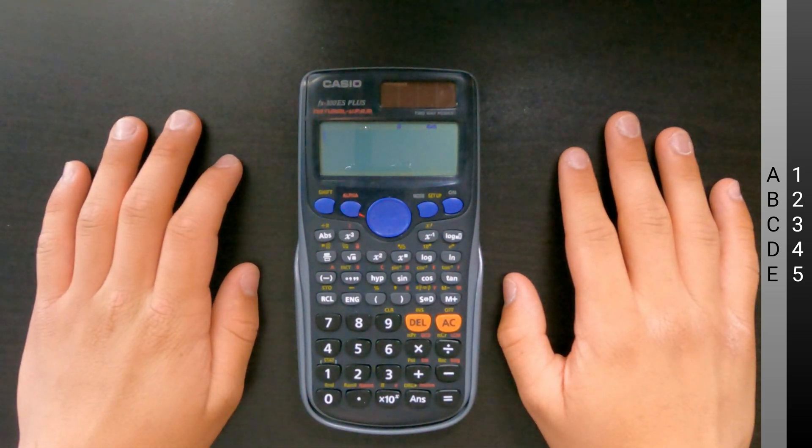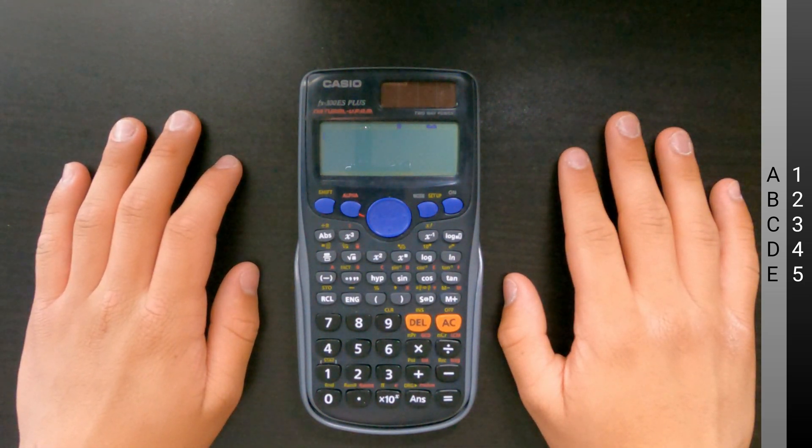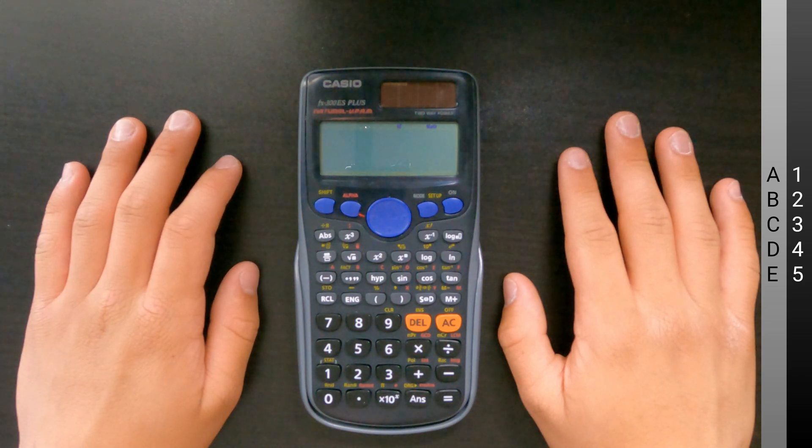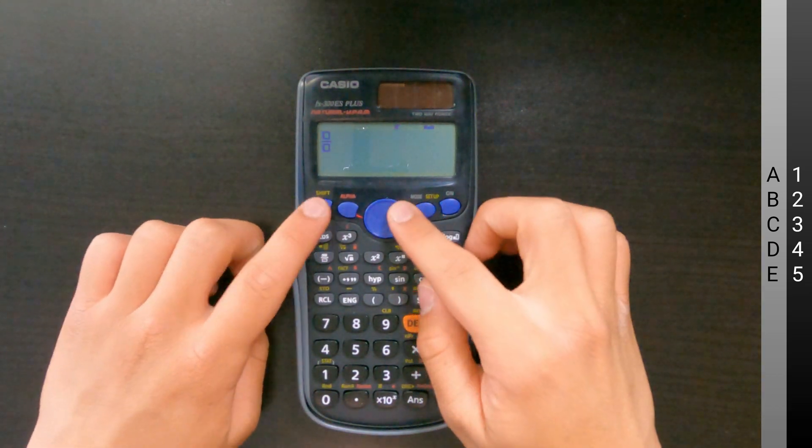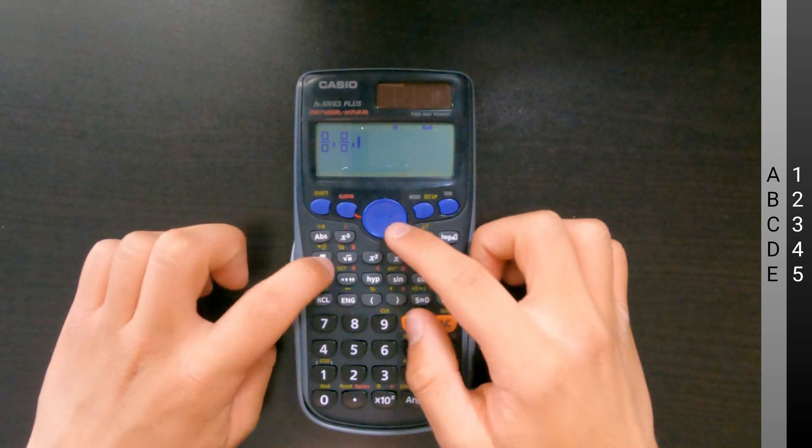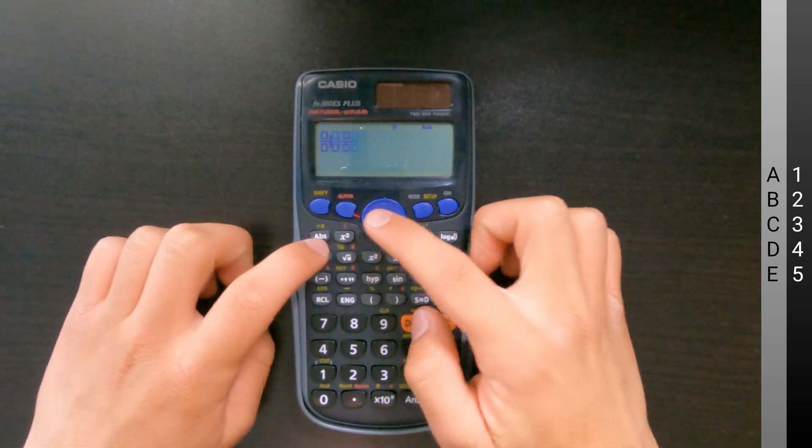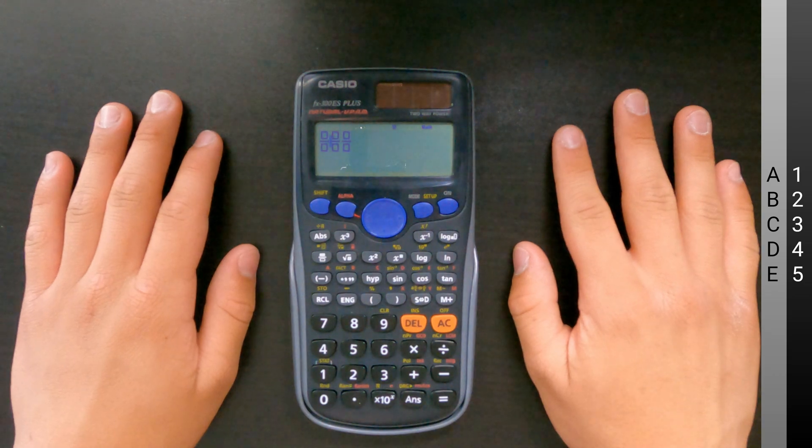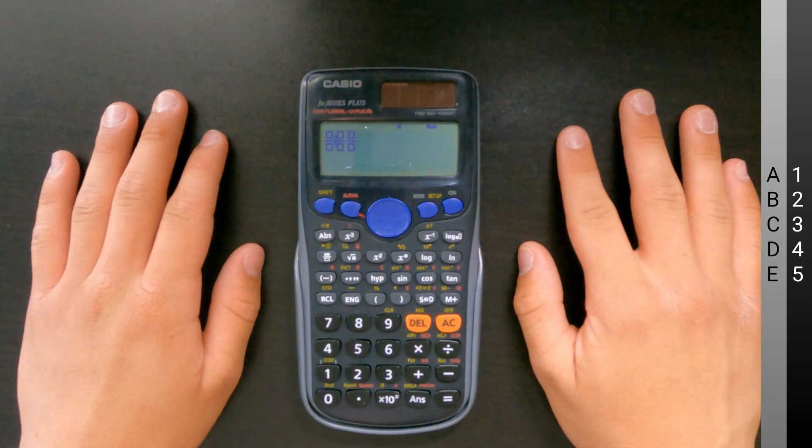Player one uses numbers one through five, and player two uses letters A through E. Zero is used as a blank space. The board is set up with three fractions side by side. Once you have made the fractions, fill the board like this.